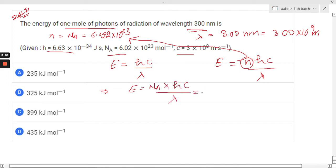Further it can be written as 6.022 into 10 raised to 23 per mole, multiplied by the value of h is 6.63 into 10 raised to minus 34 joule second, and we have speed of light 3 into 10 raised to 8 meter per second, whole divided by 300 into 10 raised to minus 9 meter.